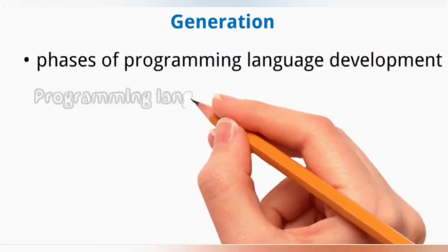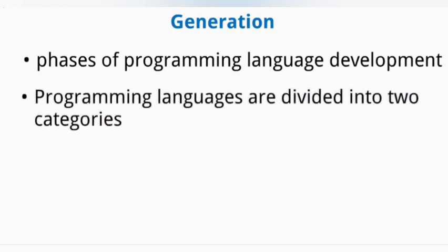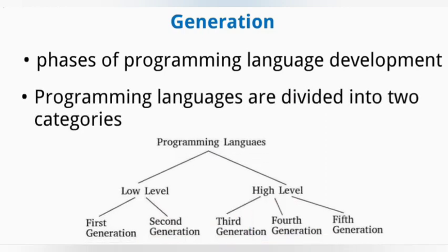Programming languages are divided into two categories: low-level language and high-level language. Under low-level language there are two generations: first generation and second generation. Under high-level language there are three generations: third generation, fourth generation, and fifth generation.